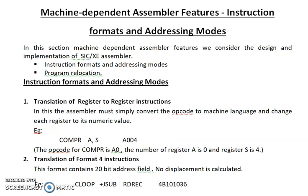First, when we come to instruction formats and addressing modes, the translation of register-to-register instructions. In this format, the assembler simply converts the opcode to machine language and changes each register to its corresponding numerical value.